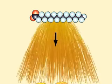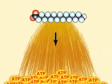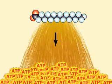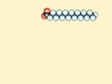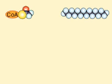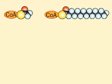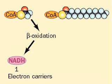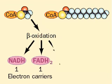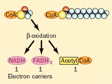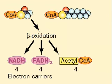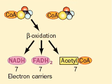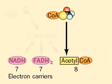Breakdown of a 16-carbon palmitate molecule yields a remarkable amount of ATP. Let's see how it happens. Each beta-oxidation — the removal of a 2-carbon unit — yields two reduced electron carriers, NADH and FADH2, plus one molecule of acetyl-CoA. There will be seven beta-oxidations, and these reactions will yield seven NADHs, seven FADH2s, and eight acetyl-CoAs.